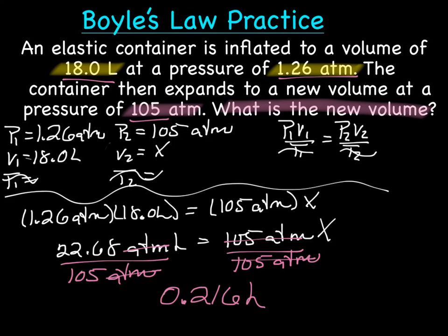Now if you guys remember, we should go back and do our check to make sure. With Boyle's Law, pressure and volume are inversely related, which means if one increases the other decreases and vice versa. So let's see how we did here. Our pressure went from 1.26 to 105 ATM, which means pressure increased, so volume should decrease. We went from 18 to 0.216, so that should be our answer.